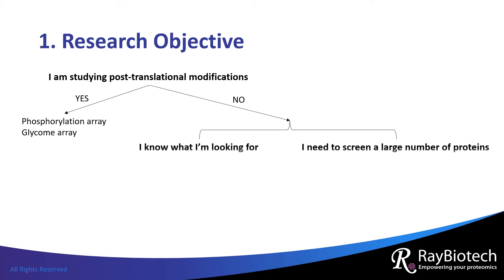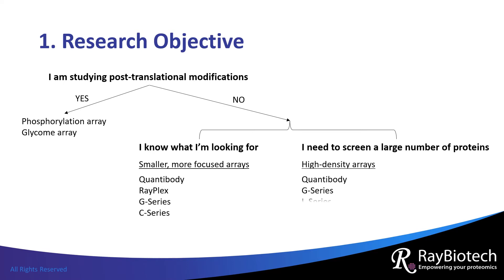If you know the proteins or the specific biological process that you want to target, then smaller, more focused arrays would be appropriate, like Quantibody, Rayplex, G series, and C series. If you want to perform large-scale protein profiling or biomarker screening, then try our high-density arrays that include Quantibody, G series, and L series. L series is our highest-density antibody array, which makes it a perfect solution for biomarker discovery studies.